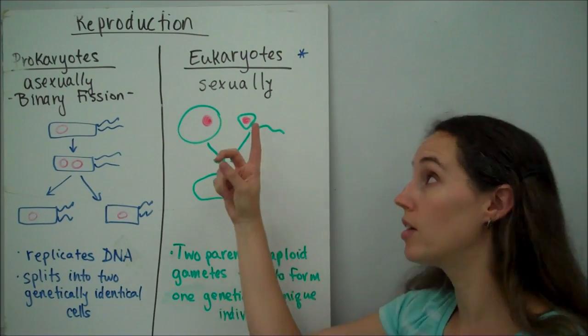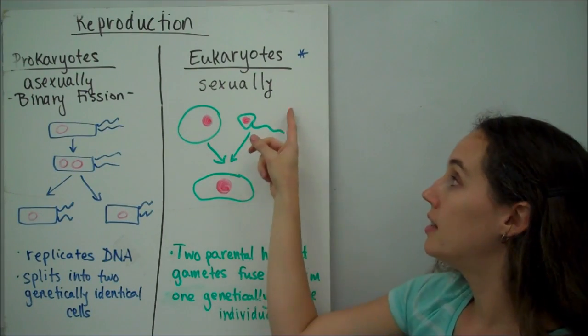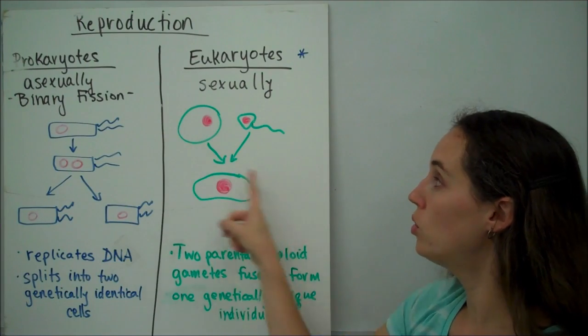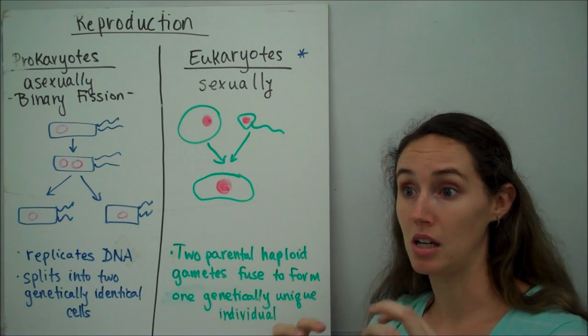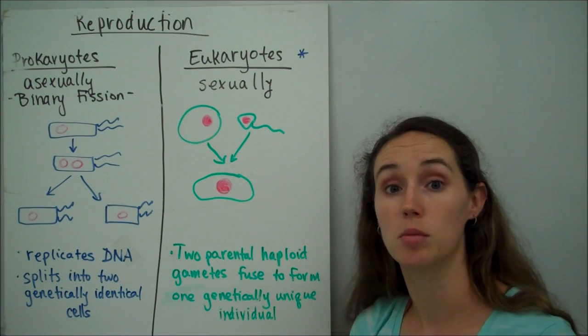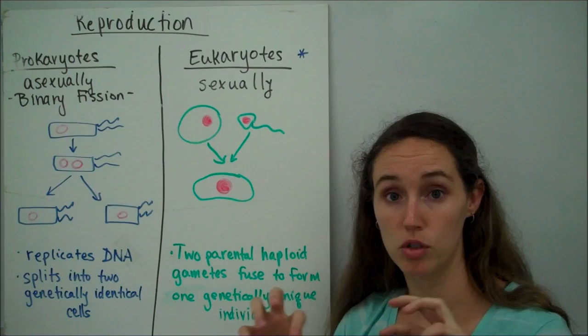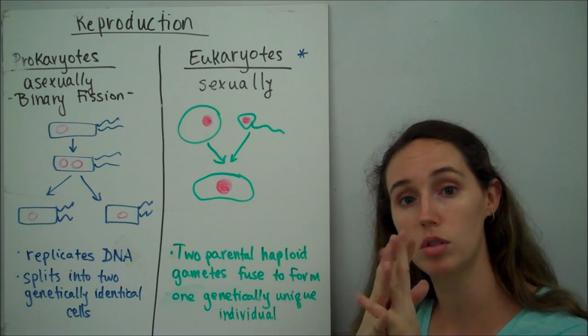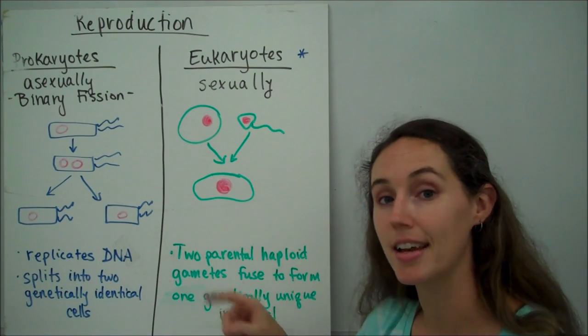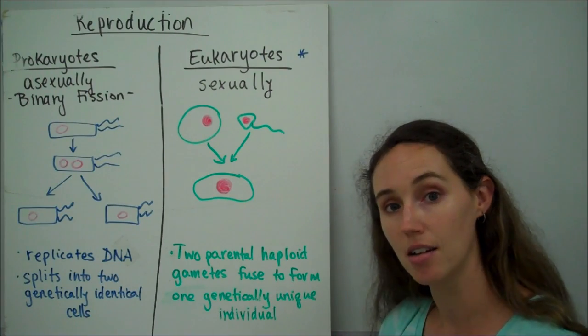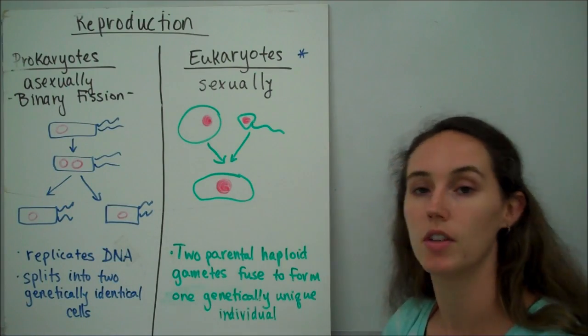On the other hand, eukaryotes reproduce sexually most of the time. And what this means is you have two parental haploid gametes, which means two sex cells that only have half as many chromosomes as every other cell from parents. So you've got two different parents, you've got cells with half as much DNA as each other, and they're actually going to fuse together and form one new genetically unique individual that's a combination of the genes of each of the two different parents.